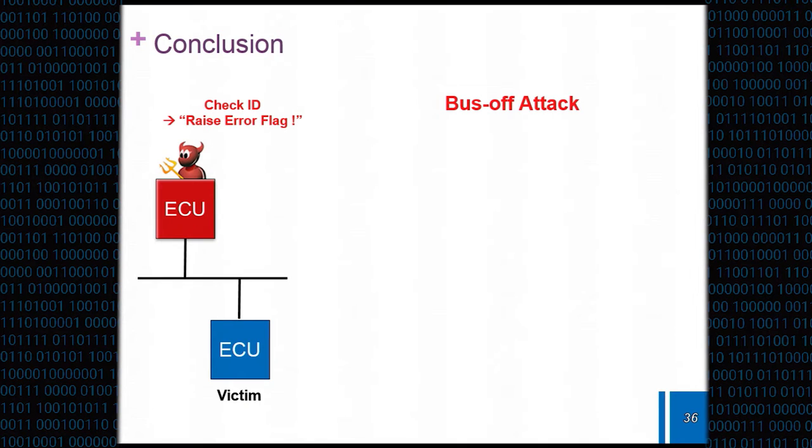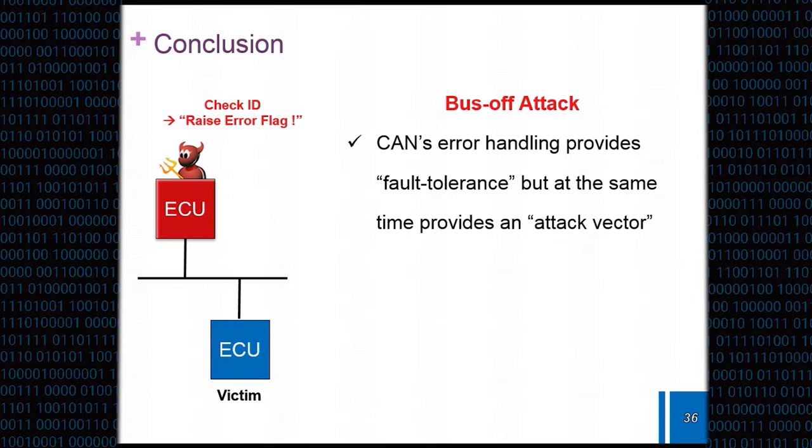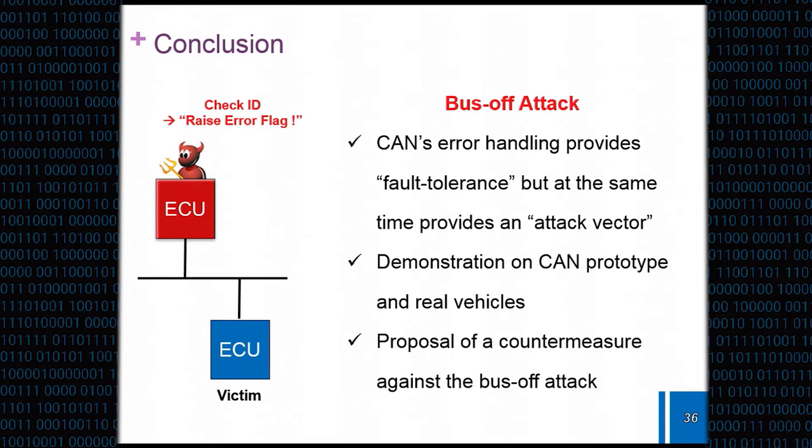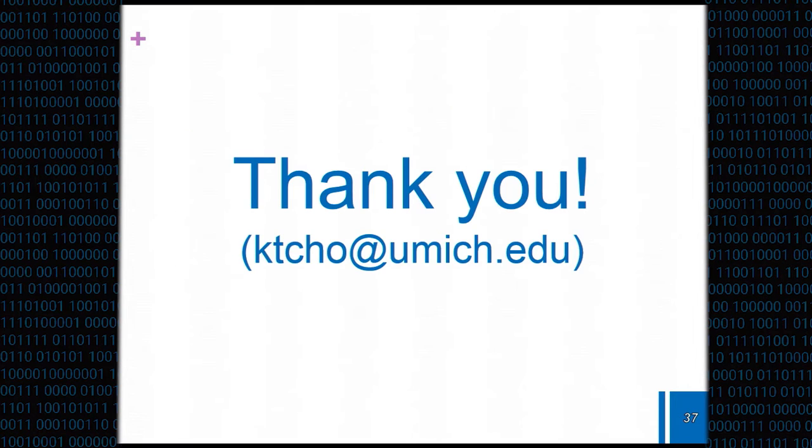To conclude the talk today, we have proposed attack method that exploits a CAN error handling scheme, which has been known for its fault tolerance, but in fact, it has been used as an attack vector. We have shown that this works on a CAN bus prototype as well as on real vehicles. And we propose the countermeasure against the bus off attack, but I would really like to have vehicle manufacturers investing more in redesigning things so that this can be defended properly. Thank you. Very impressive talk.